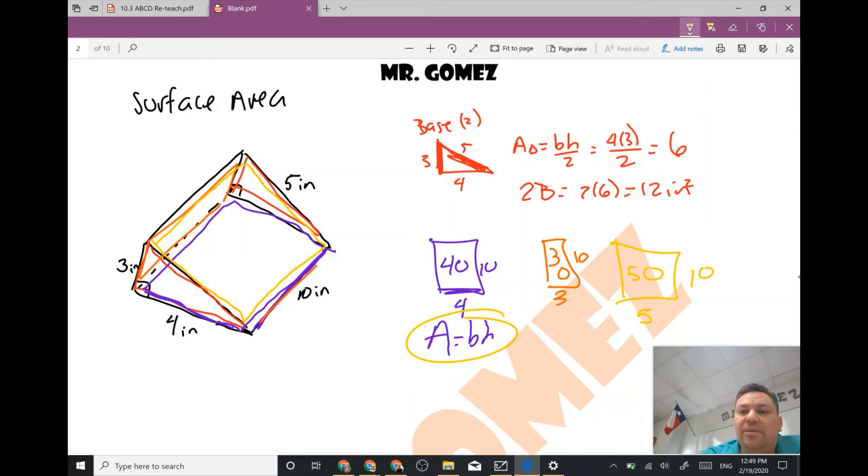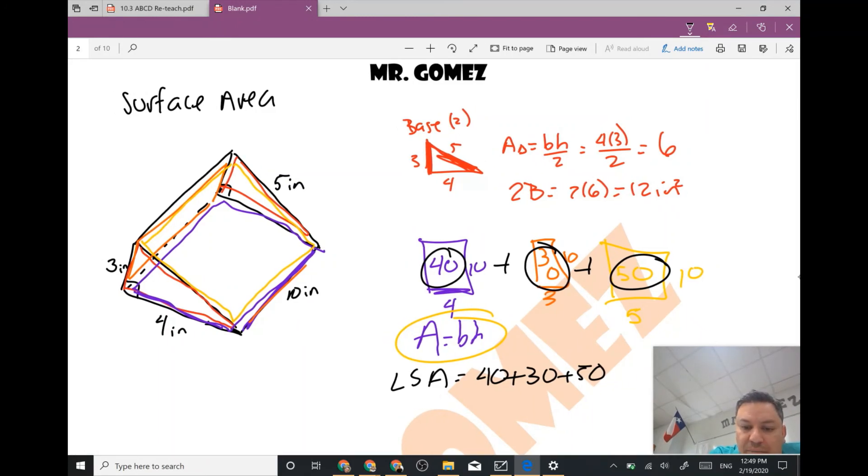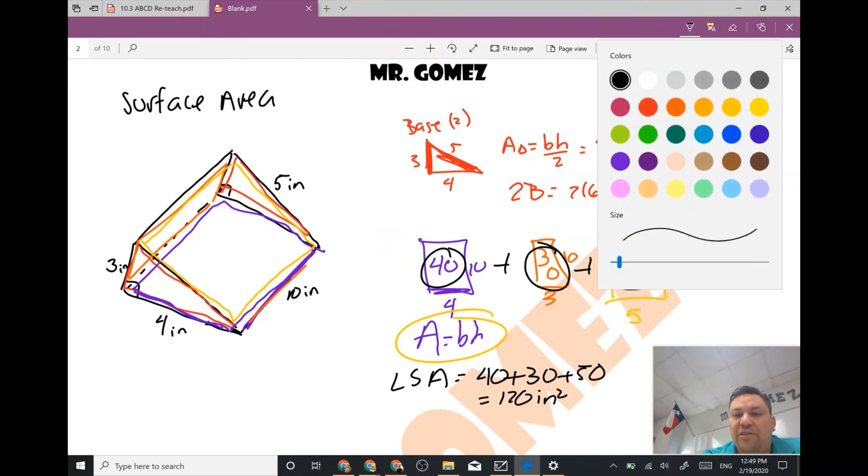So if they're asking me to find the lateral surface area, I'm just going to take the area for each one of those rectangles and add them all up. So my lateral surface area, it'll be 40 plus 30 plus 50 which gives me a total of 120 inches squared. That's my lateral surface area.